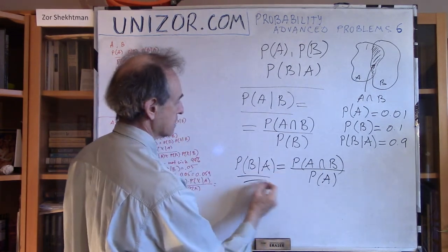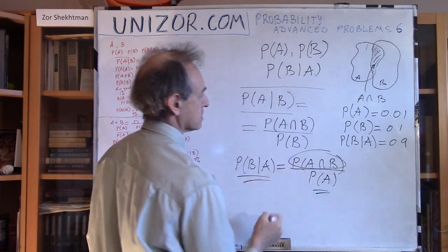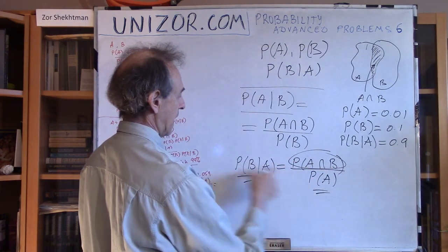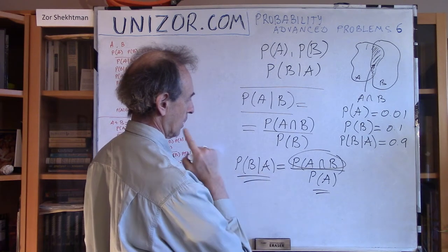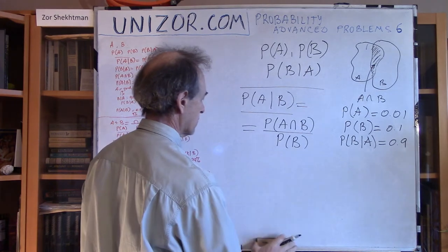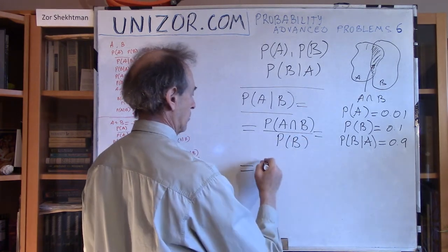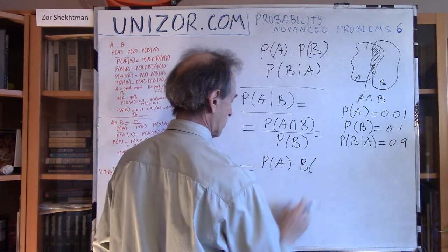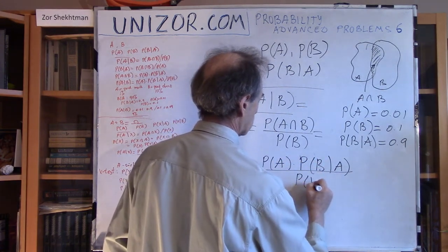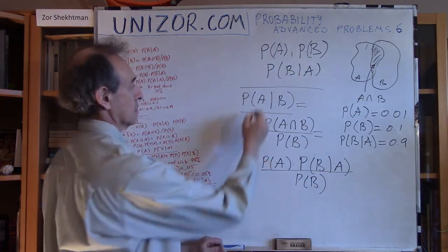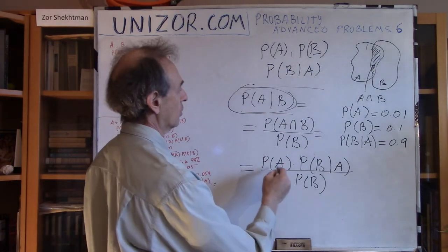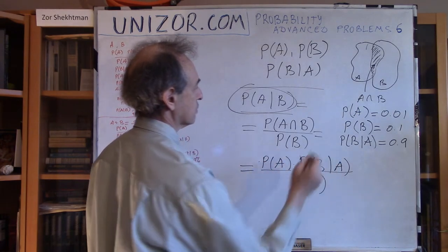We know P(B), we know P(A), and we know P(B|A), so we can determine the intersection and substitute. The formula for conditional probability of A given B is: P(A|B) = P(A) × P(B|A) / P(B). This gives the conditional probability of A given occurrence of B, when we know P(A), P(B), and P(B|A).